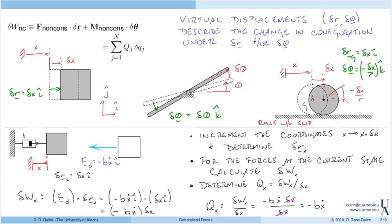We've shown that the virtual work leads to a generalized force exactly equal to the magnitude of the damping force in the i direction, which is not surprising. However, as we'll see in other examples, we don't always simply recover the physical forces. Depending on the coordinates we use, we might recover something akin to a moment or some other quantity — the generalized force is not always just the physical force applied.